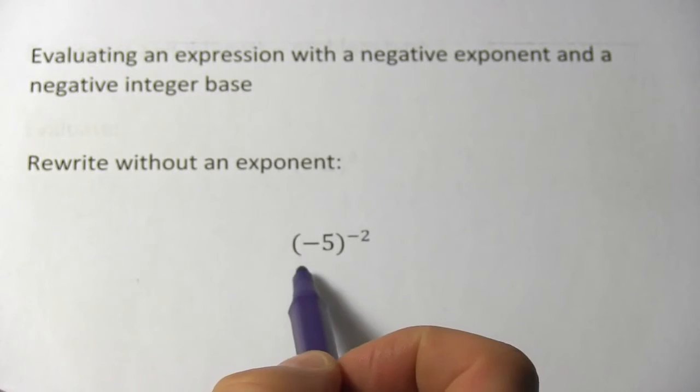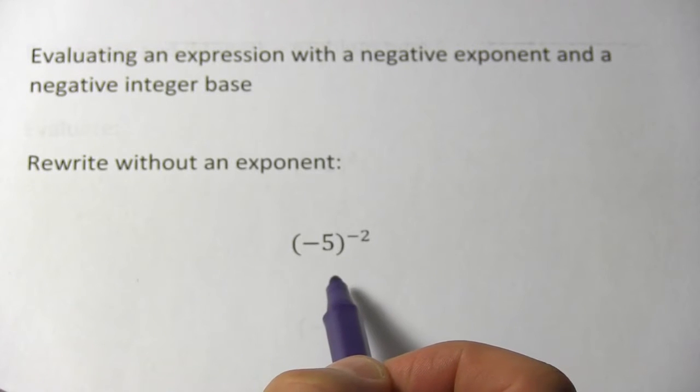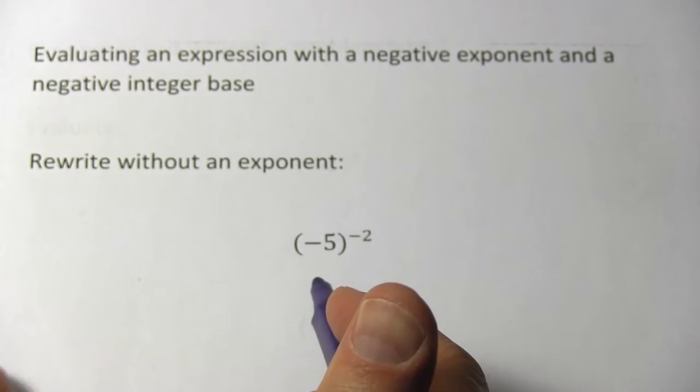In these problems, we are taking a negative integer and raising it to a negative exponent. So how should we approach this?